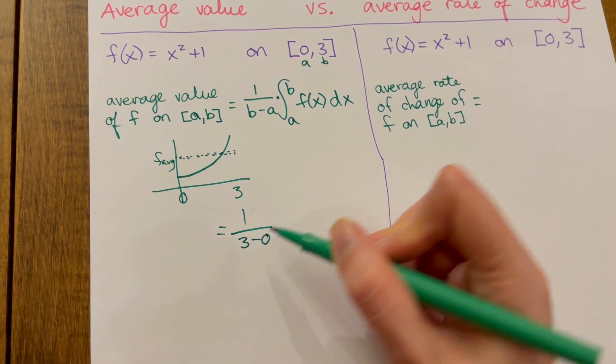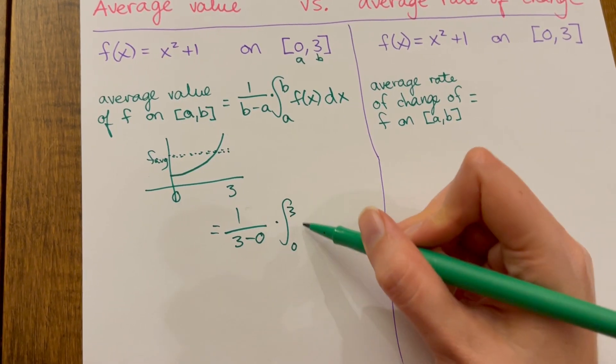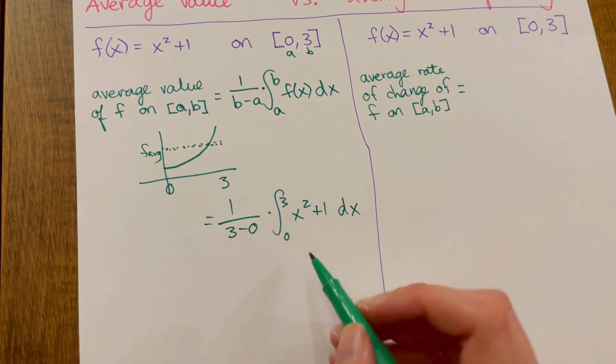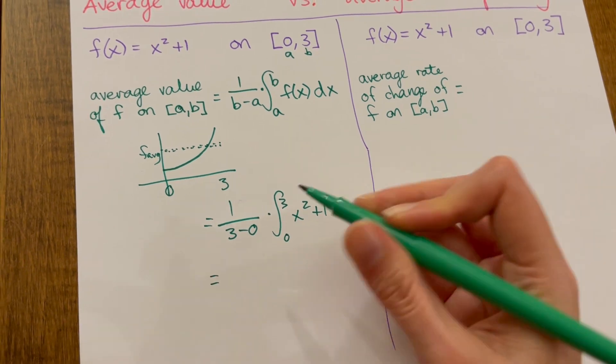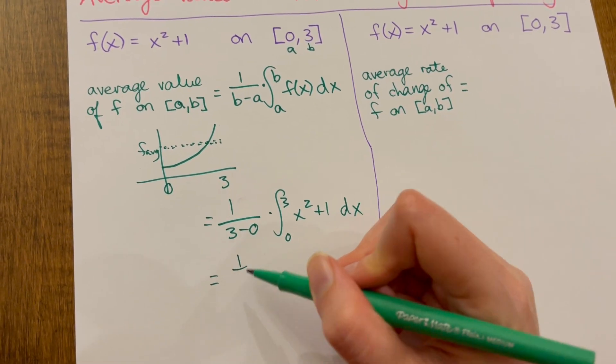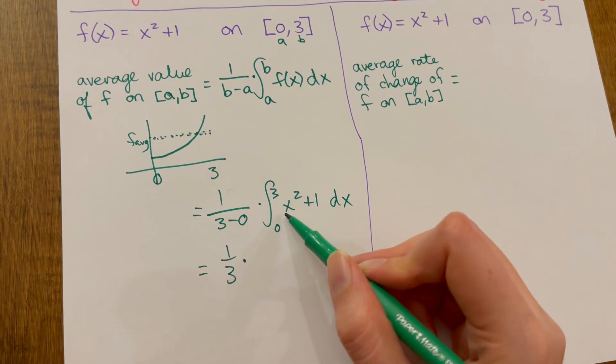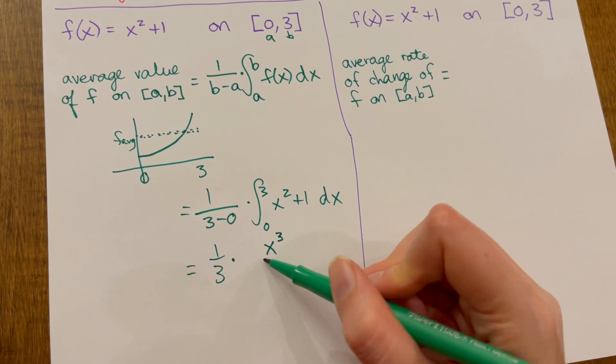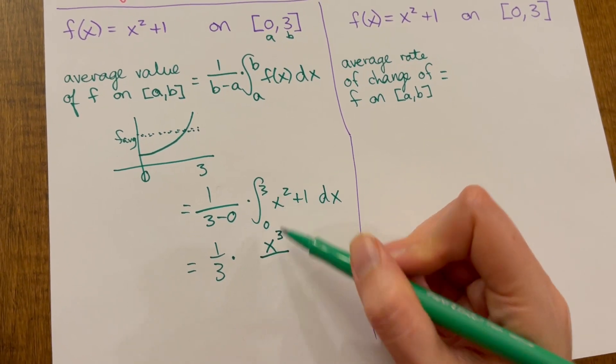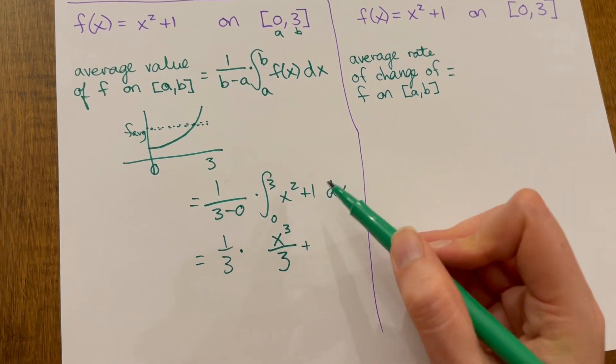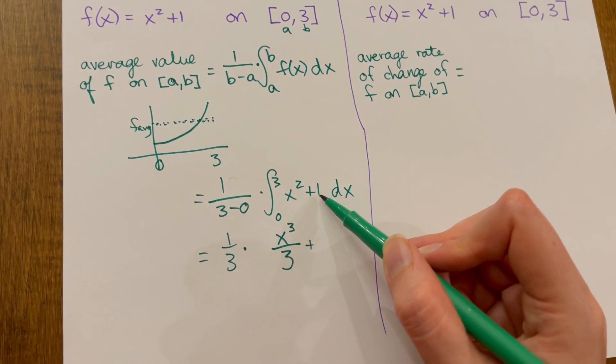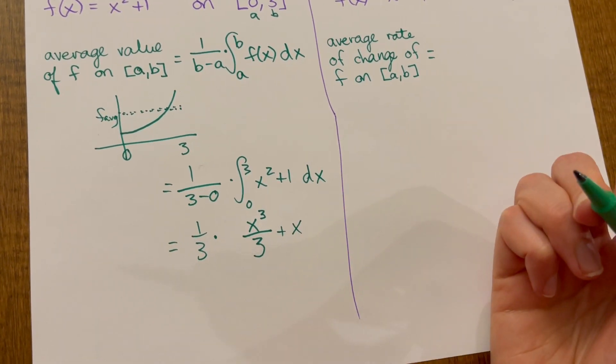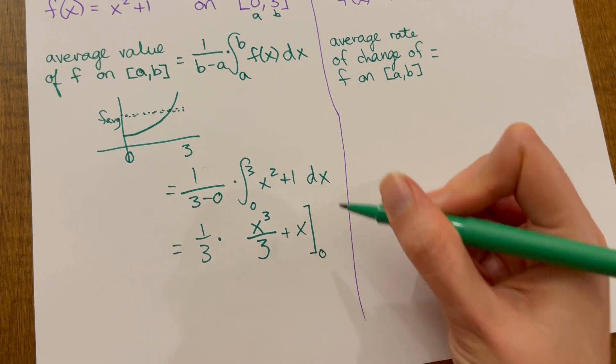Customizing this formula for this specific function and this specific interval, we'll have 1 over 3 minus 0 times the integral from 0 to 3 of x squared plus 1 dx. We calculate that by taking this antiderivative and simplifying this fraction. This is just 1 third times. This antiderivative will use the power rule.